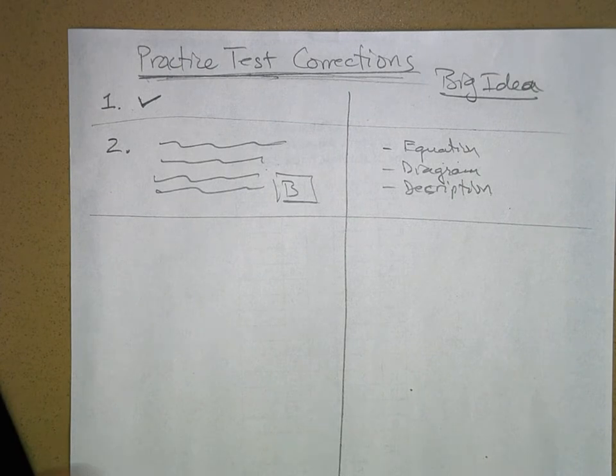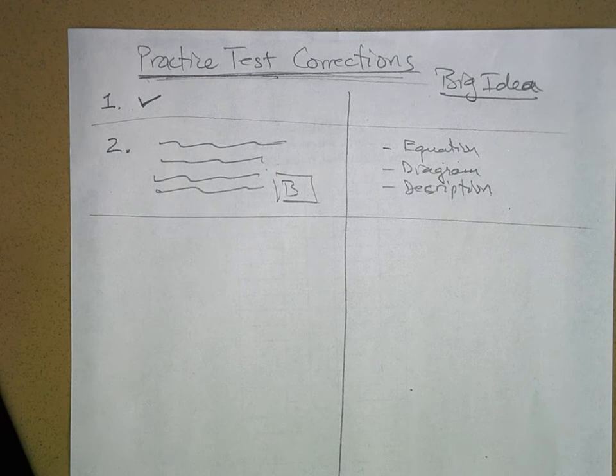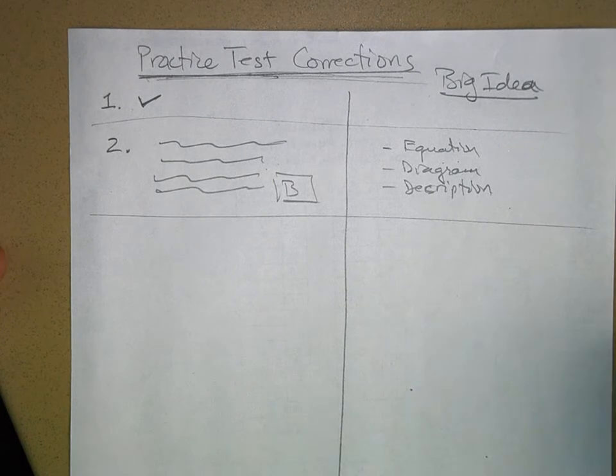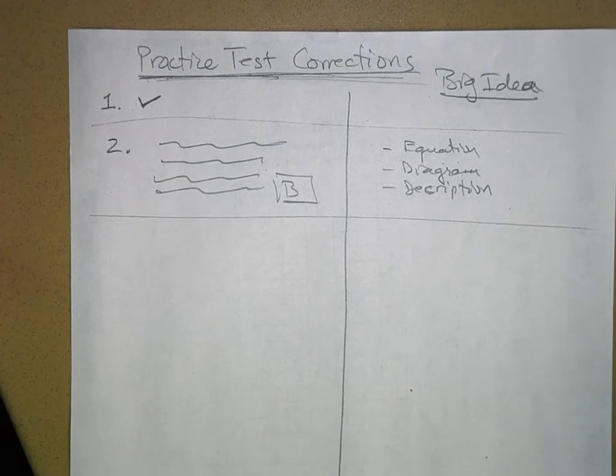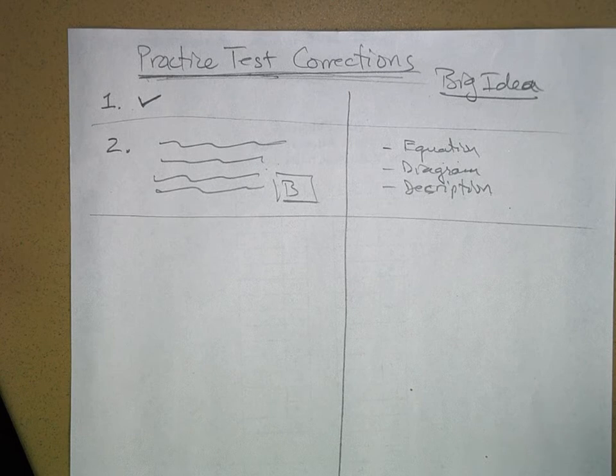You put them, grade it in red pen. You put a minus one next to all the ones that you've missed and circle in red the correct answer.